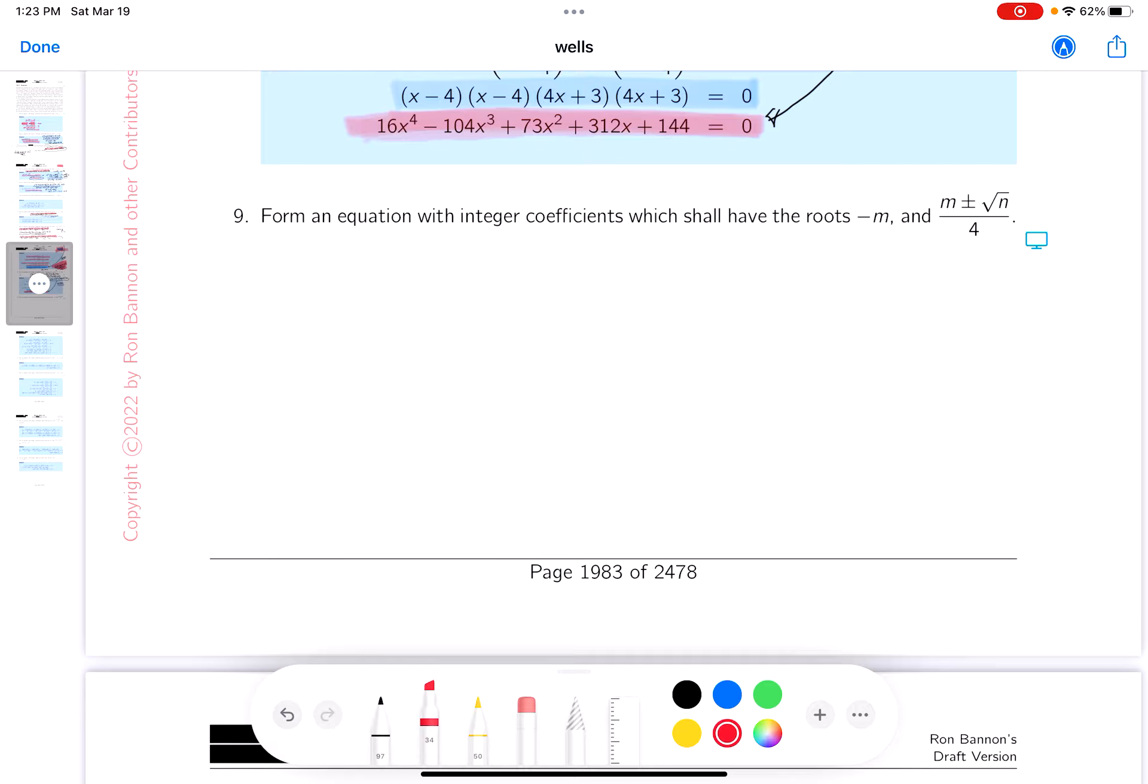Okay, they're introducing a parameter m into the problem. Let's say you want to get an integer coefficient polynomial that has these roots. So, if minus m is a root, it becomes kind of easy to write down what the factor is. It's just simply x plus m.